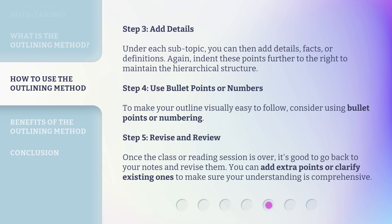Step 3: Add details. Under each sub-topic, you can then add details, facts, or definitions. Again, indent these points further to the right to maintain the hierarchical structure. Step 4: Use bullet points or numbers. To make your outline visually easy to follow, consider using bullet points or numbering.